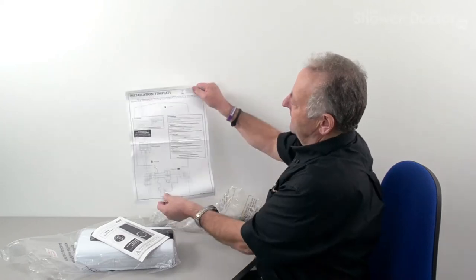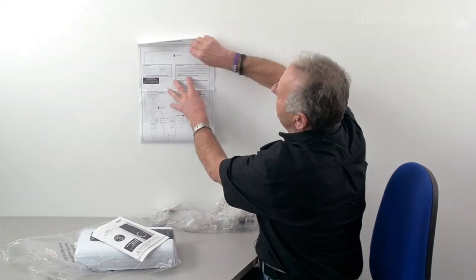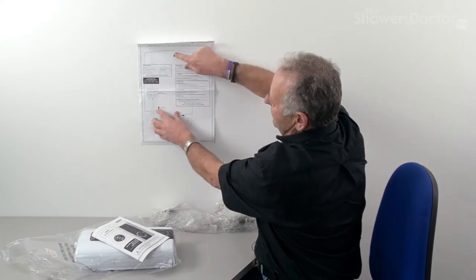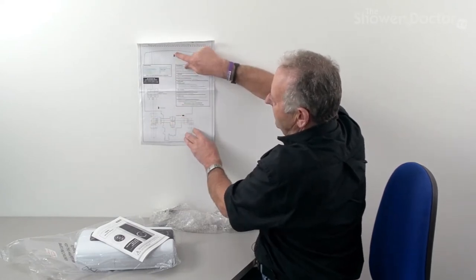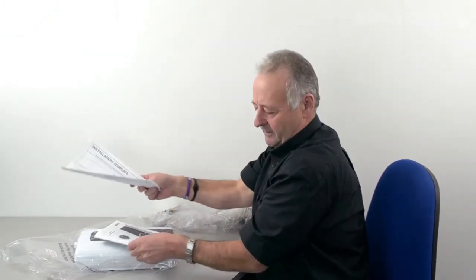And here's a fitting template. This is a great thing because you just need to tape that to the wall with some bits of masking tape and your fixing holes are already showing and it gives you a good idea of where to bring the pipes and cables in. So that's a really useful bit of paper.